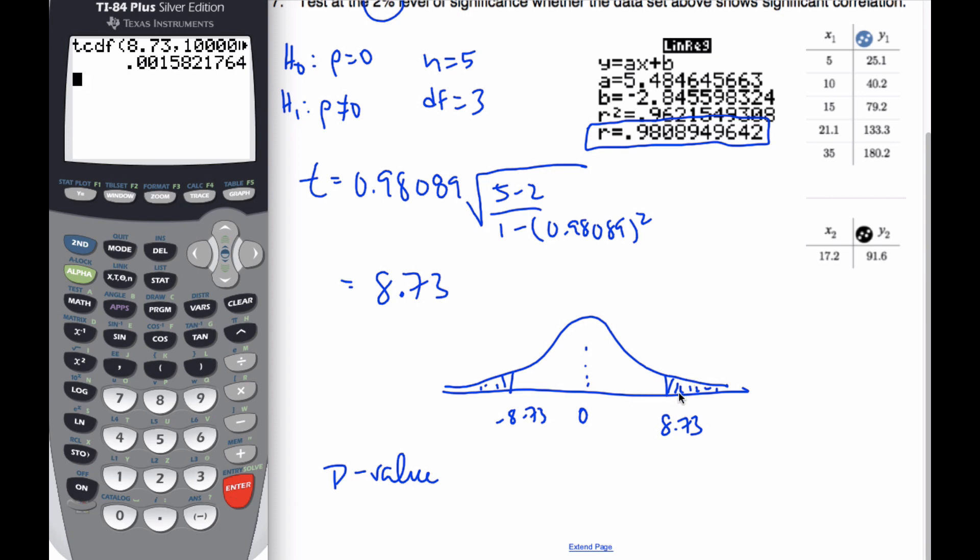I get this area 0.00158. I want both of them, so times 2. And so my p-value is simply 0.003164.